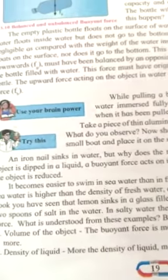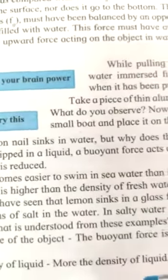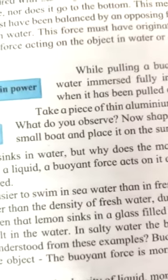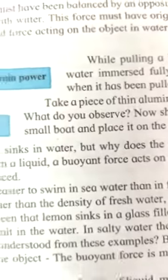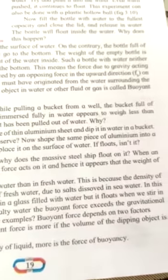It becomes easier to swim in seawater than in fresh water. This is because density of seawater is high than density of fresh water. Density means mass upon volume. So density of seawater is high than that of fresh water. Because salts are dissolved in seawater.